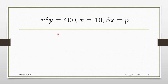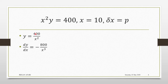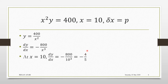Let's set this up. To differentiate, it will be best to rearrange: divide 400 by x², so you have y = 400/x². Then differentiate. This is the same as 400x⁻², so when you differentiate you get dy/dx = −800/x³. Now we find dy/dx at x = 10, which gives us −4/5.